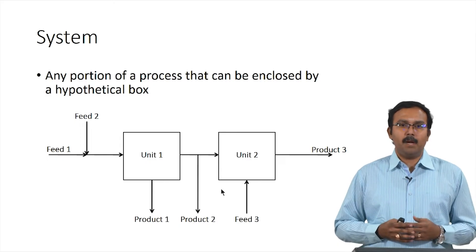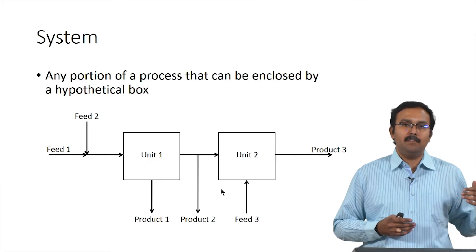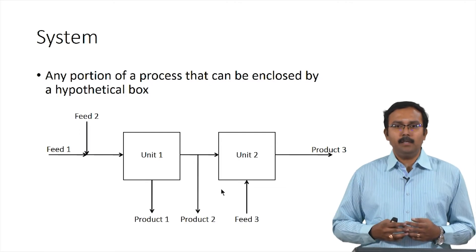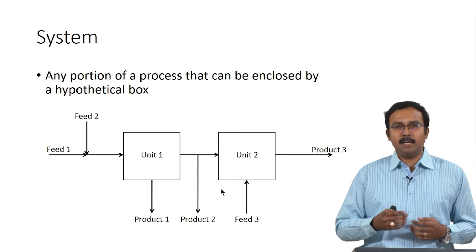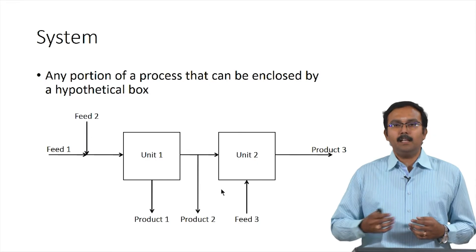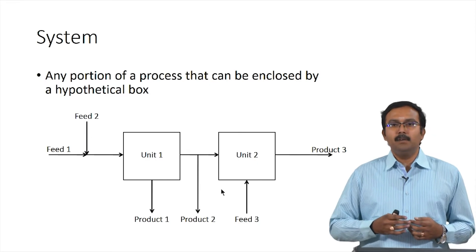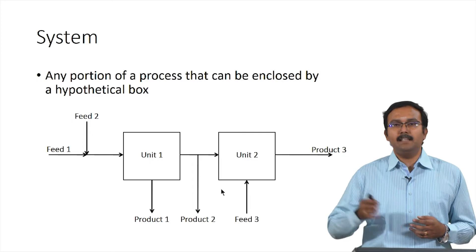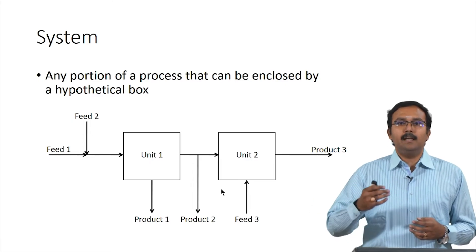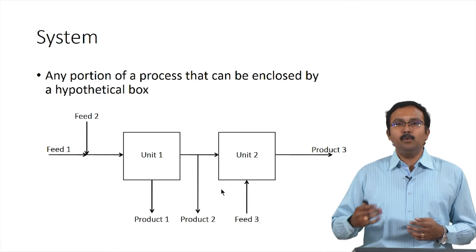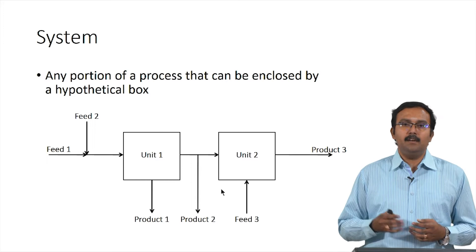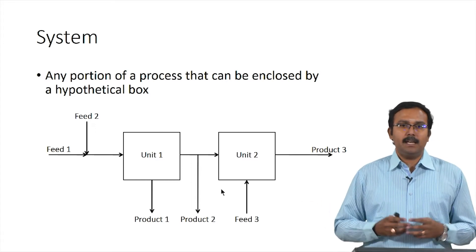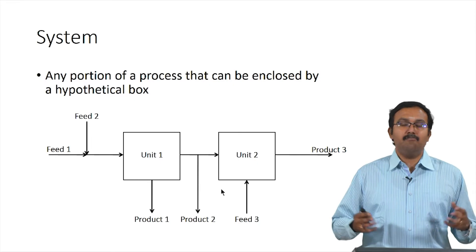In this example problem, two feeds get mixed and enter unit 1. A product stream is recovered from unit 1, and another stream leaving unit 1 is split into product 2 and the input for unit 2. Unit 2 has another input which is feed 3, finally forming product 3. This particular process can have multiple systems.